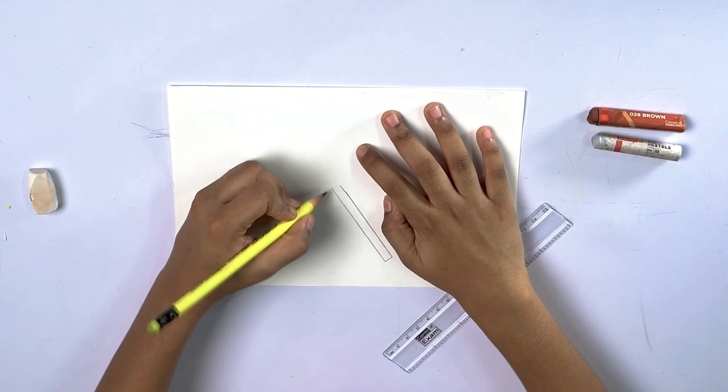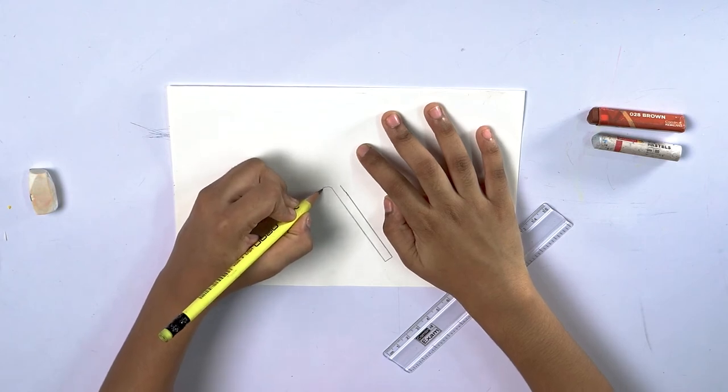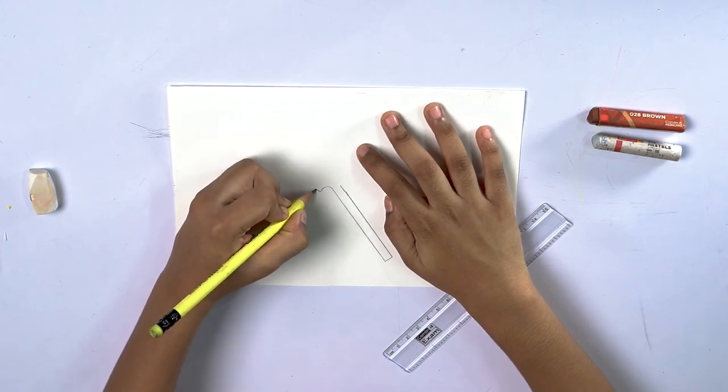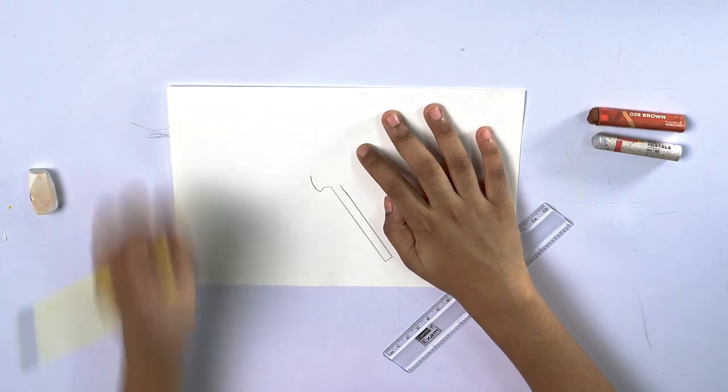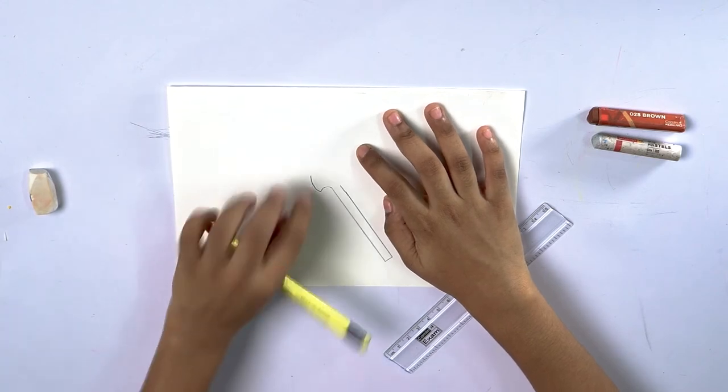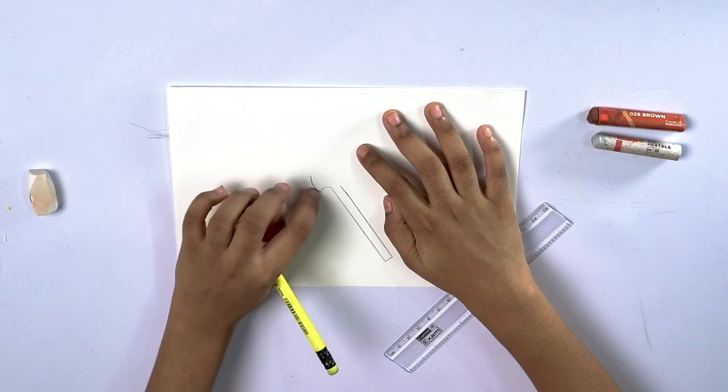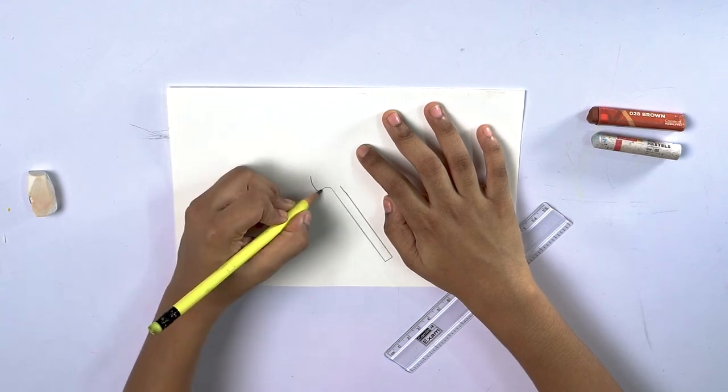Now we will draw a curved line like this and one more like this. We will draw one more line, we will draw one more like this beside it.